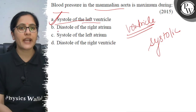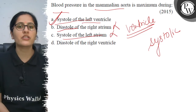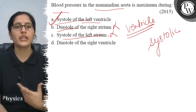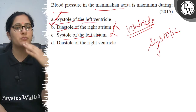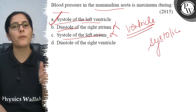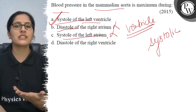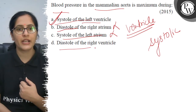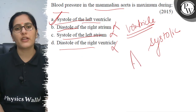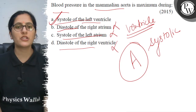Diastolic is a relaxed condition — in that condition, contraction is not occurring in the ventricle. We see that the bicuspid and tricuspid valves close and the semilunar valves open, guiding maximum blood pressure. Diastolic is a relaxed condition, so the correct answer is option A. Best of luck.